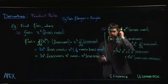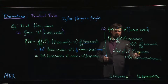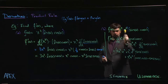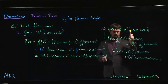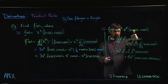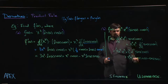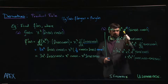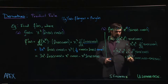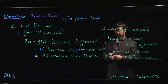The first term is 4x³ · eˣ · sin x · cos x — where 4x³ is the derivative of the first factor. The second term is x⁴ · eˣ · sin x · cos x — where eˣ is the derivative of the second factor. The third term is x⁴ · eˣ · cos x · cos x — cos x being the derivative of sin x. The fourth term is x⁴ · eˣ · sin x · (−sin x), the derivative of the fourth factor.